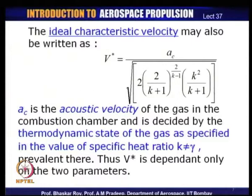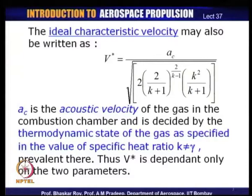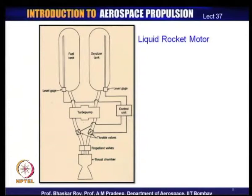So the ideal characteristic velocity — the first-cut value — can be simply calculated from the basic specific heat ratio and the acoustic velocity of the gas in the combustion chamber, making it dependent on only two parameters from an idealistic point of view. We can now look at some rocket engines — sometimes called rocket motors.